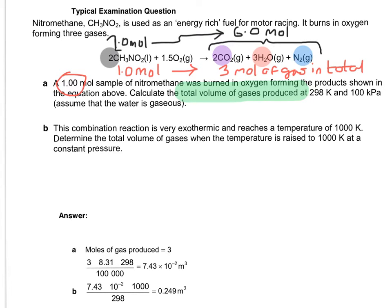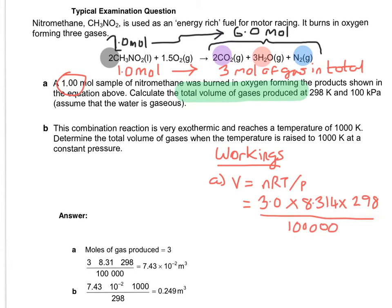Now we can start putting our figures into PV equals nRT. Because it's asking us to calculate the total volume of gases, we need to make sure that V is the subject. So I've rearranged PV equals nRT so that it has V as the subject. It gives us three moles times 8.314 times 298 over 100,000, and that gives us 7.43 times 10 to the minus 2 metres cubed. I've labelled up the V equals nRT over P rearrangement and asked you to make a note of the unit conversions each time.